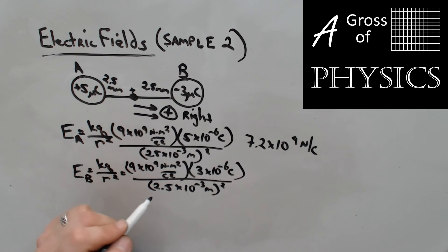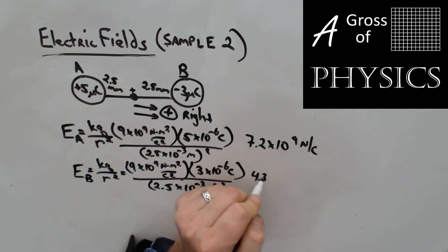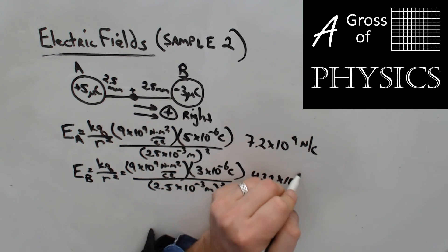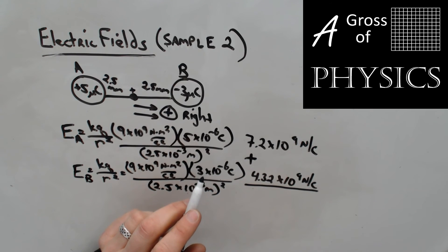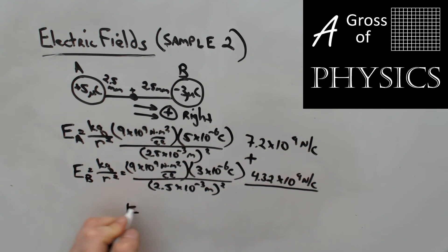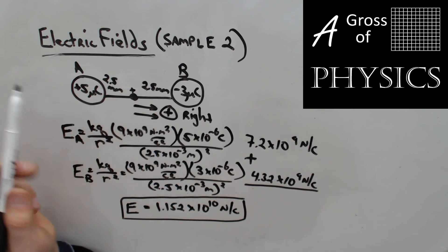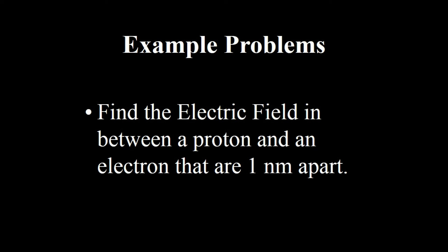For charge B (−3 microcoulombs): 9×10⁹ times 3×10⁻⁶ divided by (2.5×10⁻³)² gives 4.32×10⁹ Newtons per Coulomb. Adding the two fields: 4.32×10⁹ plus 7.2×10⁹ gives a final electric field of 1.152×10¹⁰ Newtons per Coulomb. Since both fields point to the right — each contributing in the same direction — the resultant electric field at the midpoint is 1.152×10¹⁰ N/C to the right. What would a proton do? It would be pushed to the right.